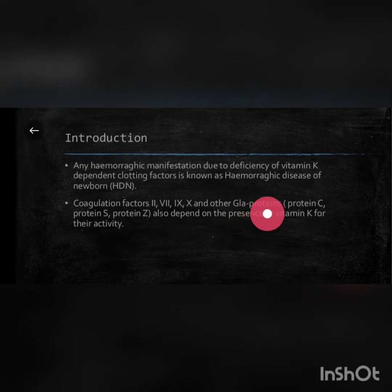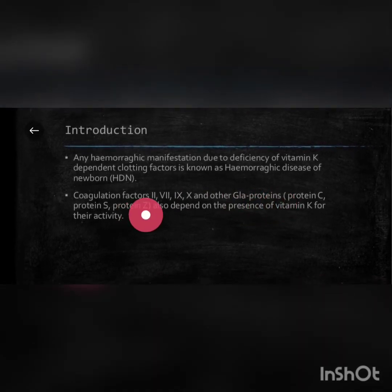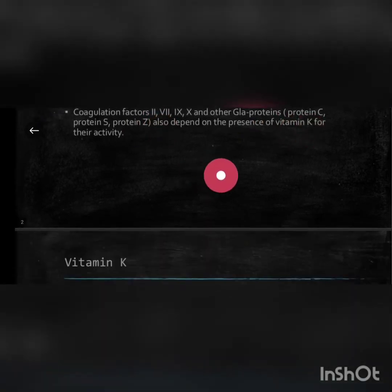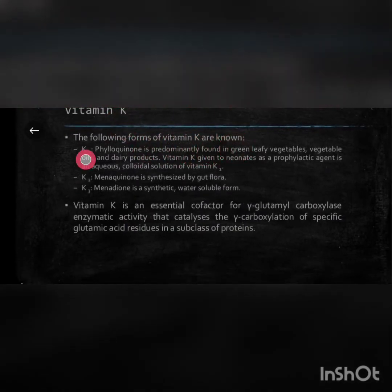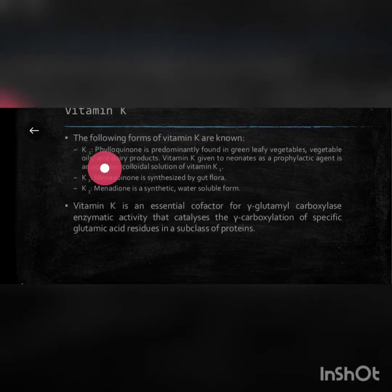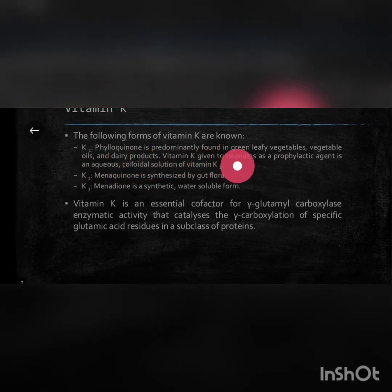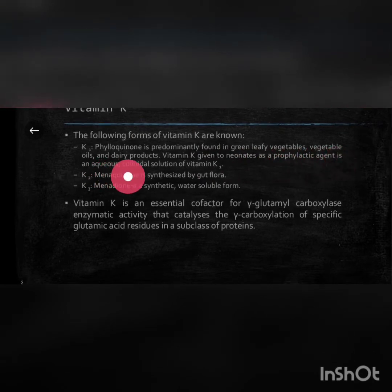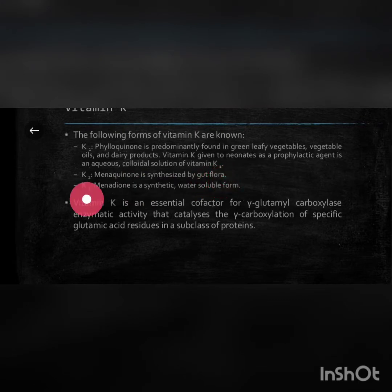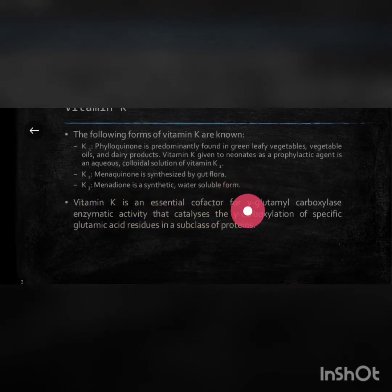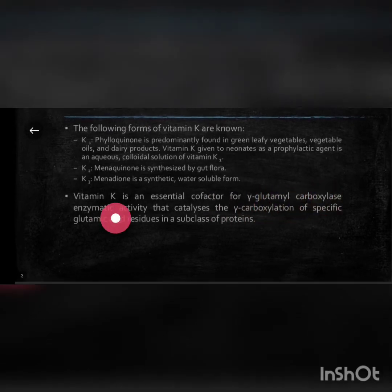other GLA proteins — that is protein C, protein S, and protein Z — also depend on the presence of vitamin K for their activity. The following forms of vitamin K are known: K1 phylloquinone is predominantly found in green leafy vegetables, vegetable oils, and dairy products. Vitamin K given to neonates as prophylactic agent is an aqueous color solution of vitamin K1. Vitamin K2 is known as menaquinone and is synthesized by gut flora. Vitamin K3, menadione, is a synthetic water-soluble form.